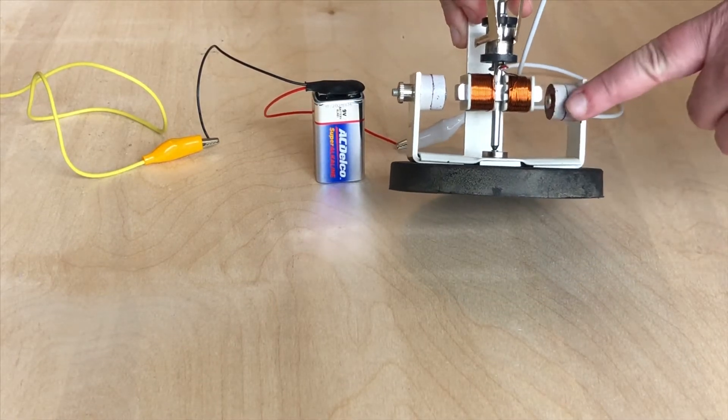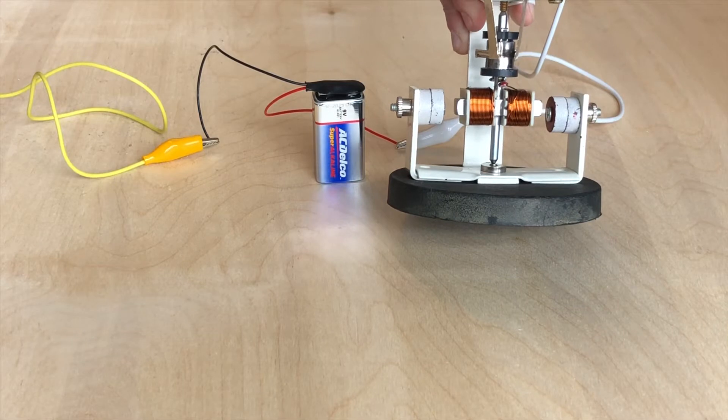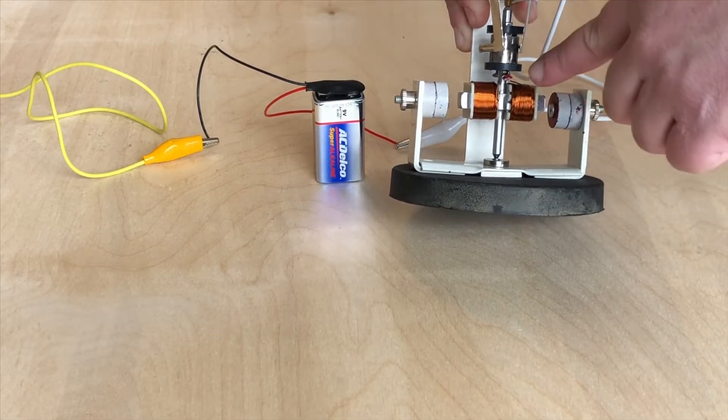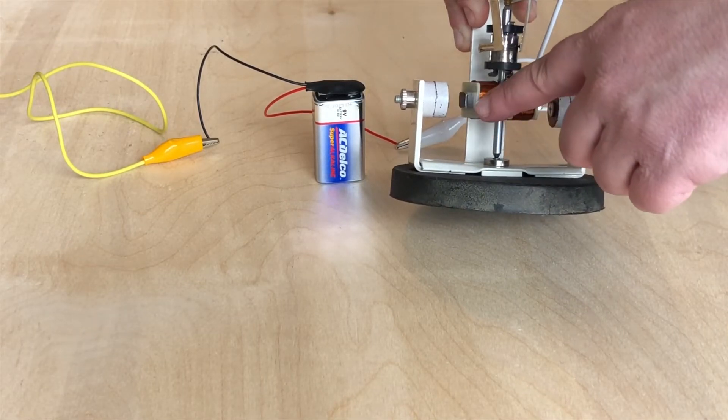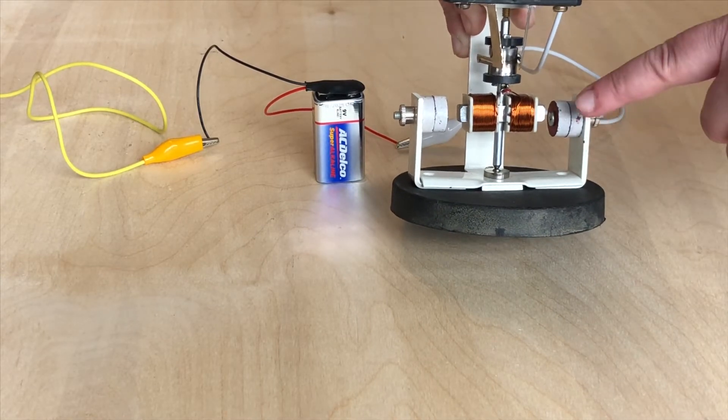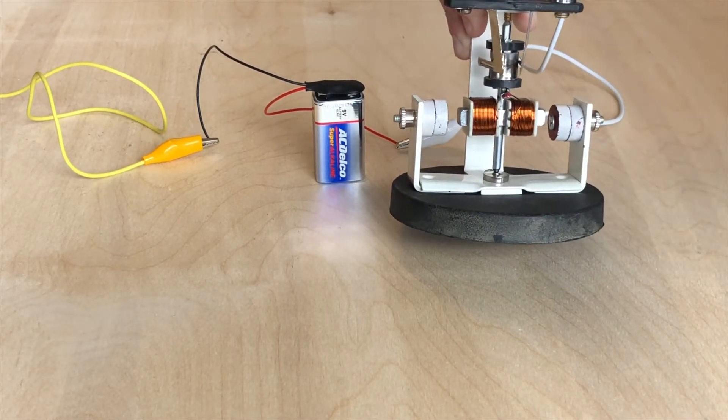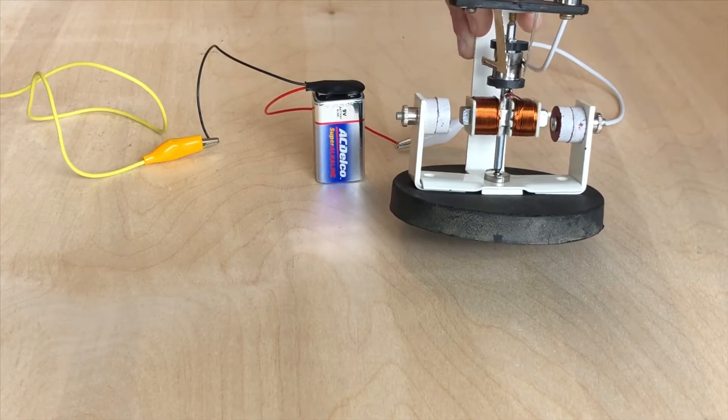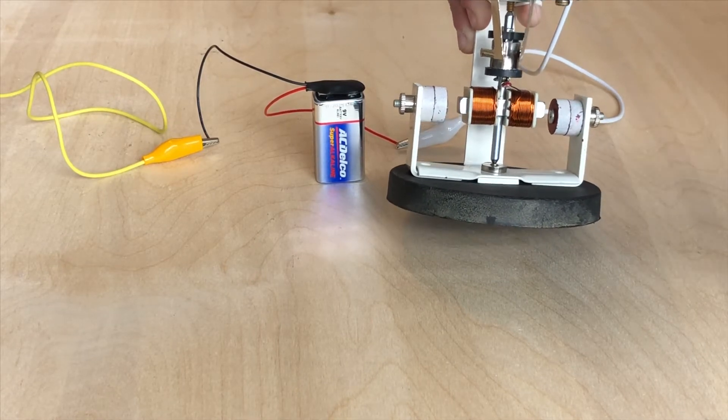So right down here we have two field magnets that are permanently set as north and south, and then we have our armature which ends up being an electromagnet because electricity will flow from the source through the coil. As you've already learned, when we have current flowing through a coil of wire around an iron core, we get a magnet.